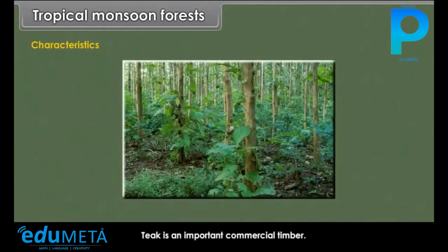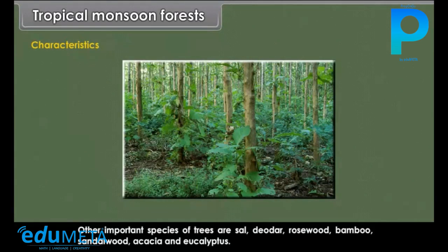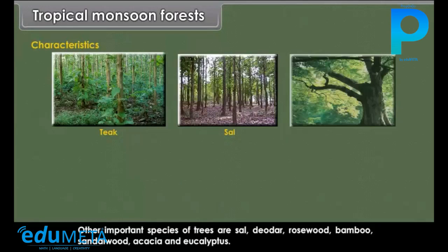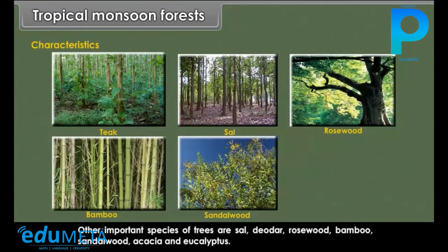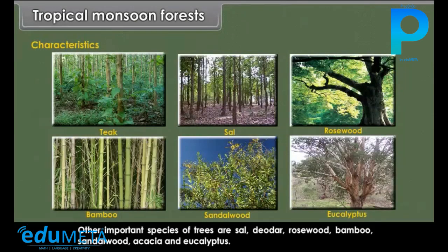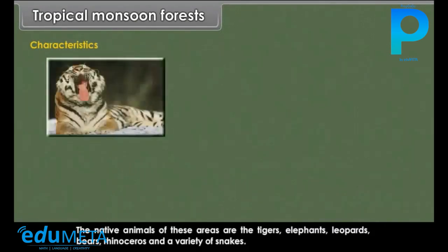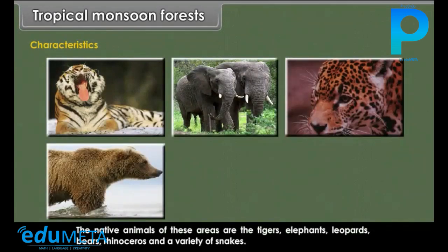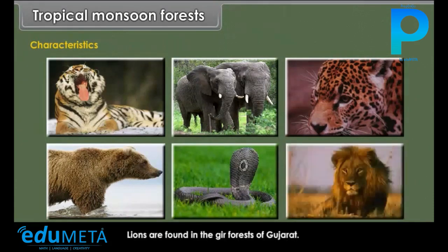Teak is an important commercial timber. Other important species of trees are Sal, deodar, rosewood, bamboo, sandalwood, acacia and eucalyptus. The native animals of these areas are tigers, elephants, leopards, bears, rhinoceros and a variety of snakes. Lions are found in the Gir forests of Gujarat.